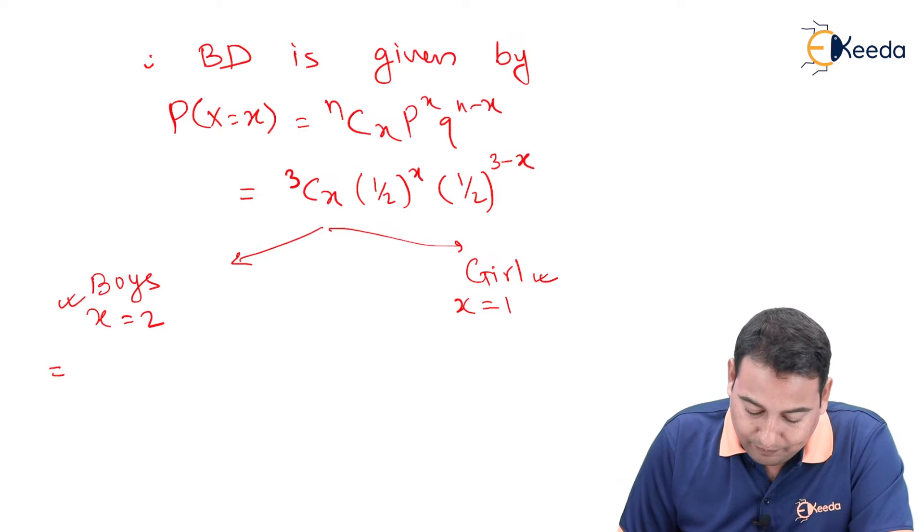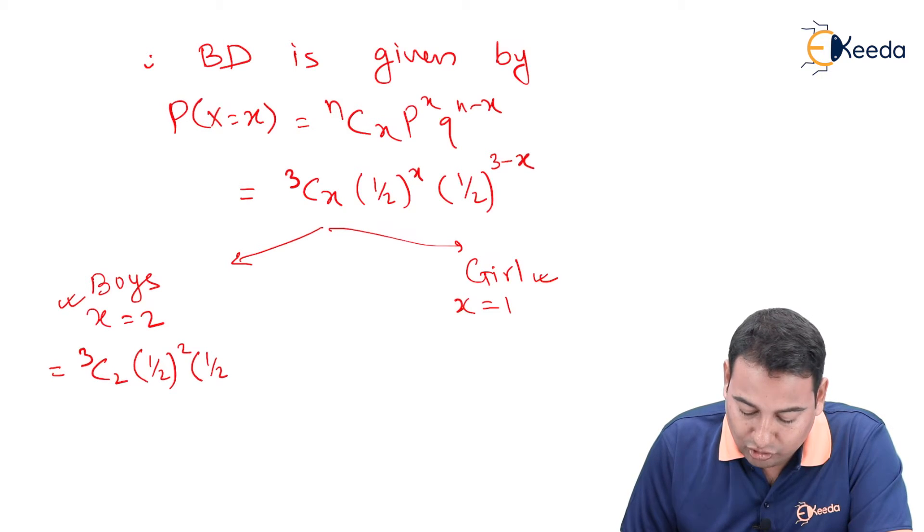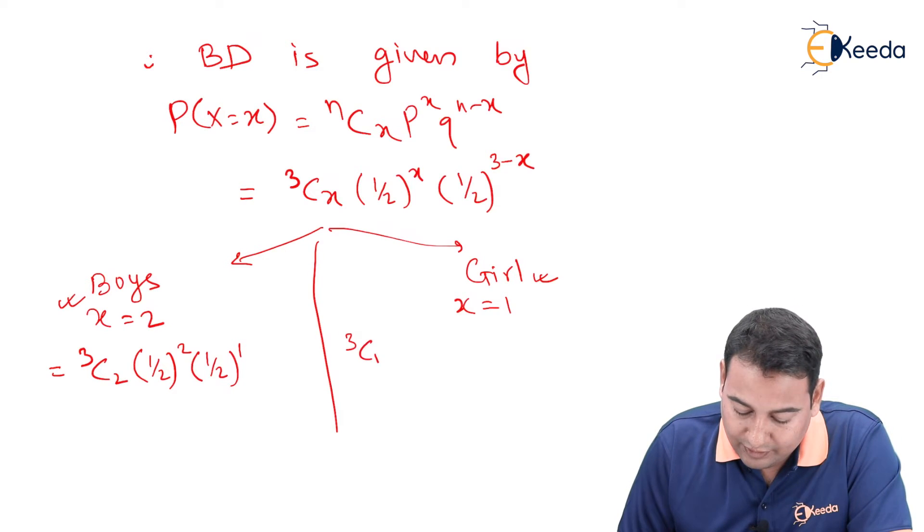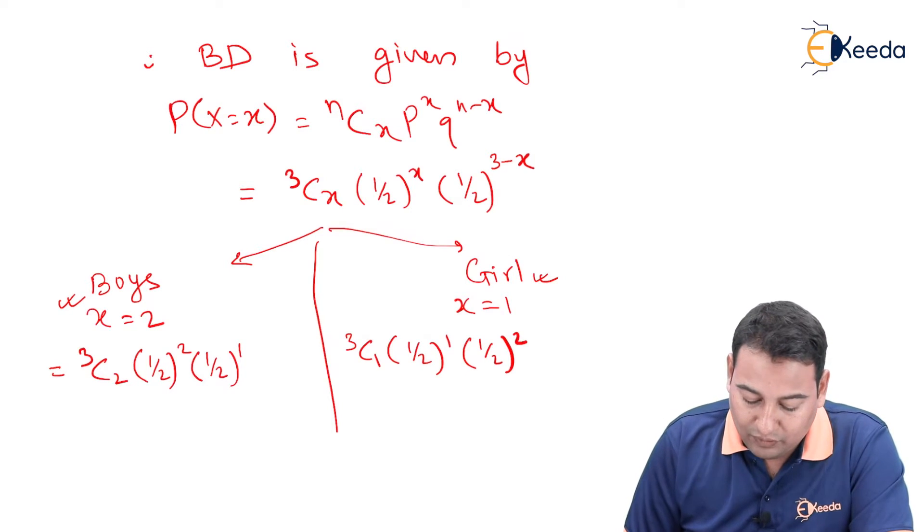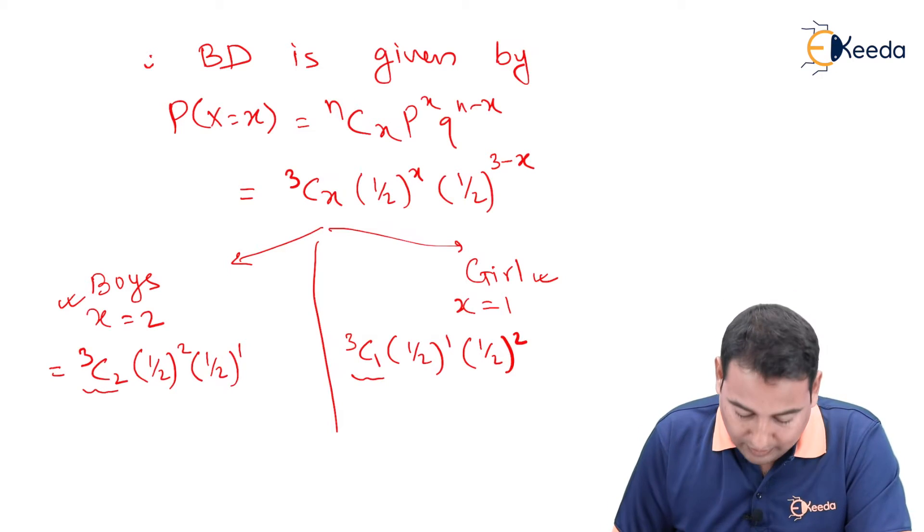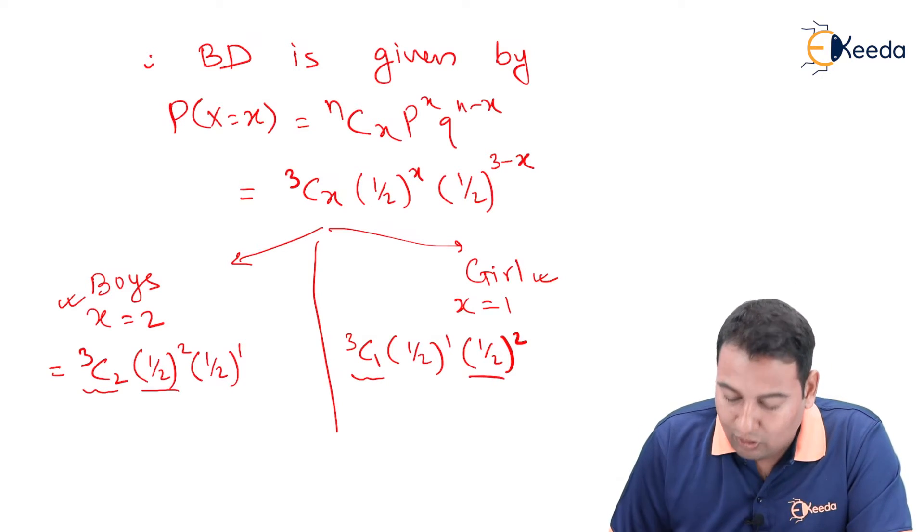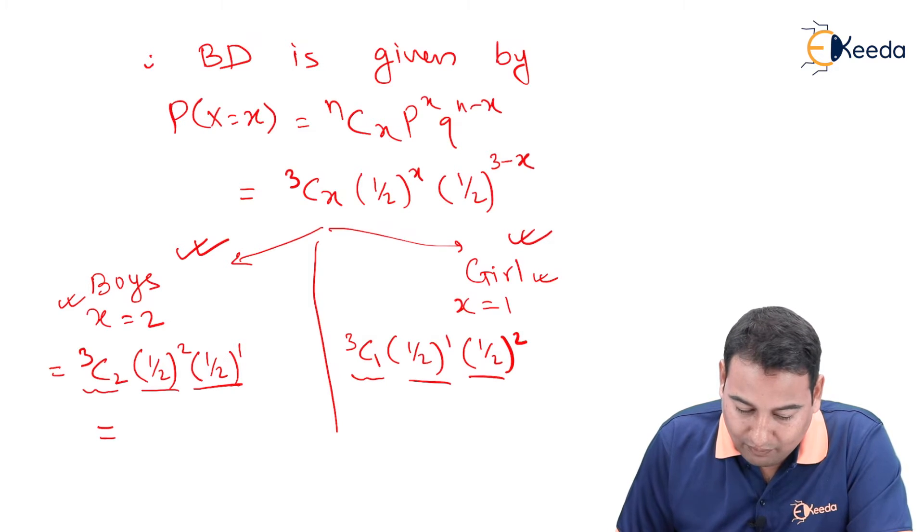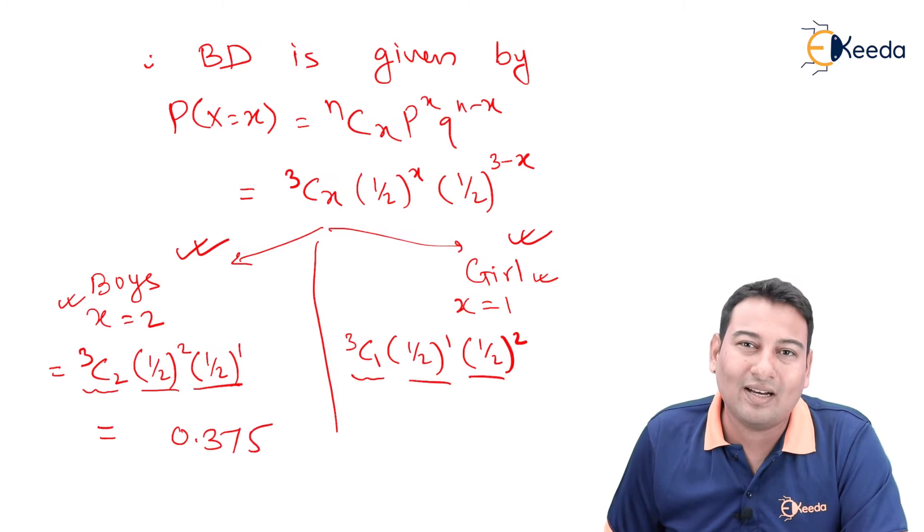So here is 3C2, half raise to 2, half raise to 1 and here it will be 3C1, half raise to 1, half raise to 2. Observe these two, 3C2, 3C1. Put in calculator, you will get to know they are same. Half square, here also half square, half raise to 1, here also half raise to 1. That means you select either this or this. Your answer will be same, that is 0.375. Why it is same? Because P and Q are same, that is half.